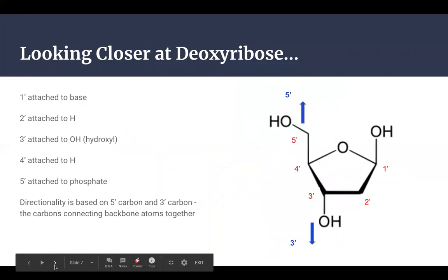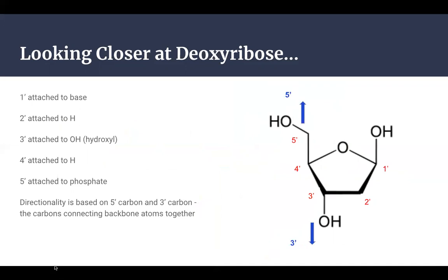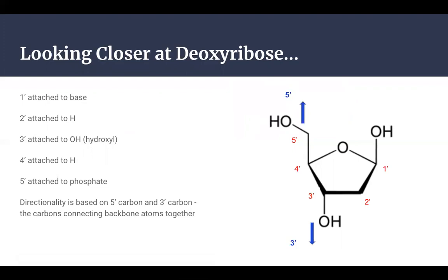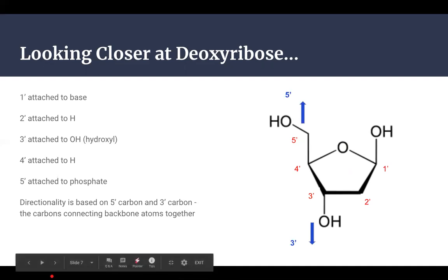Going into more detail: the ring is numbered, and as you may remember from organic chemistry, all the carbons have a directionality to them. On the 3' carbon, where you see the hydroxyl group, that is where the next nucleotide will be attached. That is why the directionality of nucleotide addition goes from 5' to 3' — it cannot go from 3' to 5', because that conformation will not work for that phosphodiester bond to form.